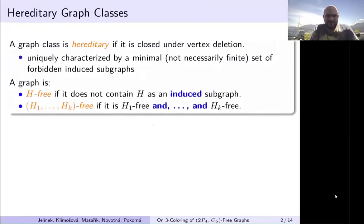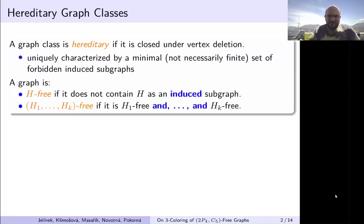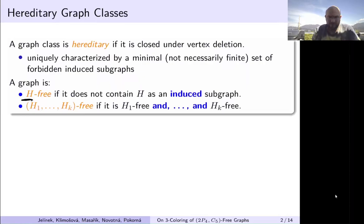Today we will be speaking about hereditary graph classes. Those are graph classes that are closed under vertex deletion — it means that if a graph belongs to a graph class, then any induced subgraph also has to belong to the same graph class. These are uniquely characterized by a minimal set of forbidden induced subgraphs; this set does not have to be finite. If we forbid just one induced subgraph H, those are called H-free graphs.